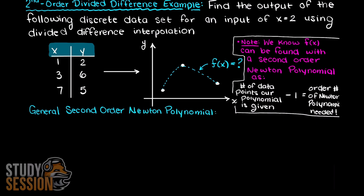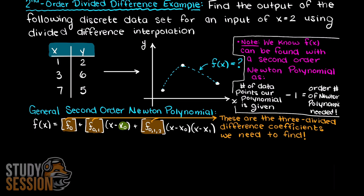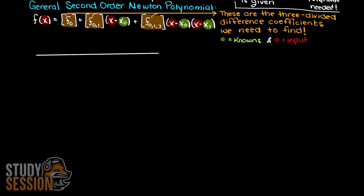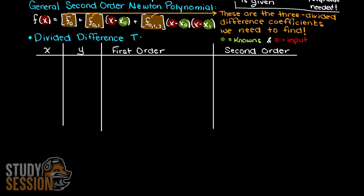To find this we use a second order Newton polynomial, which has the following general equation. We are only missing these coefficients — these are called our divided differences, hence the name of the algorithm. To set up a divided difference table of the second order, we will create a table with the column headers x, y, first order, and second order. Then let's translate our discrete data supplied to us in the table under the columns x and y. For clarity I will also add the variable nomenclature here as well.